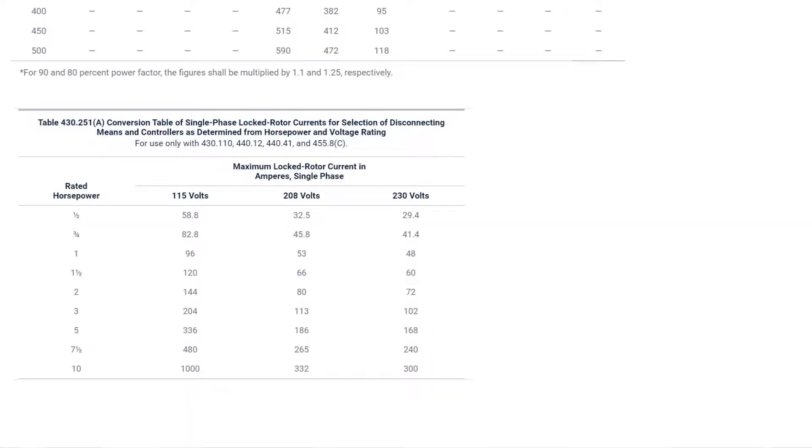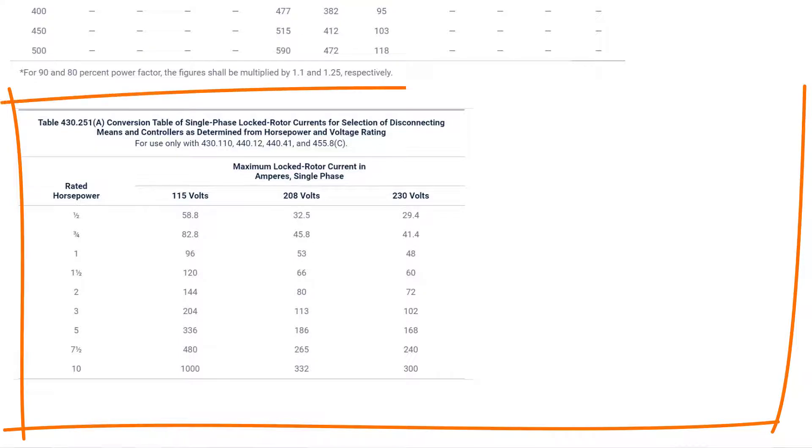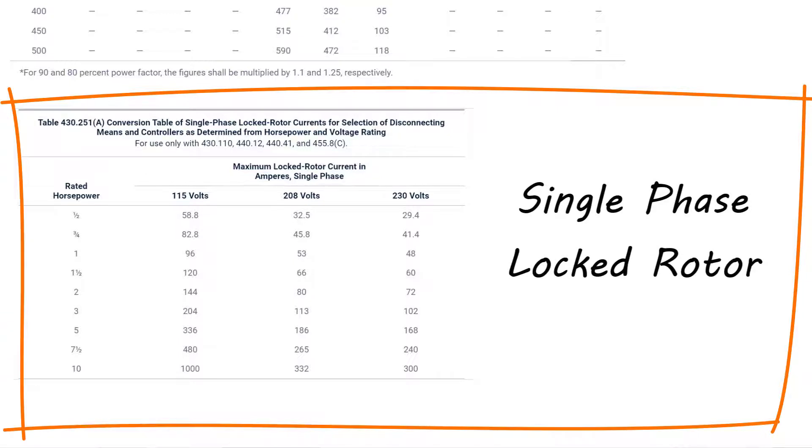And then while we're here on this viewing plane, let's look underneath that 430.250 table. You'll see another table down below it. This is a 430.251A table. I want you to do a frame of that table, but I want you to take to the right of that table that blank space. I want you to make it big because we're going to put a note over there. Now you've got that blank spot that you've got inside your box. And with your pen, I want you to write single-phase locked rotor.